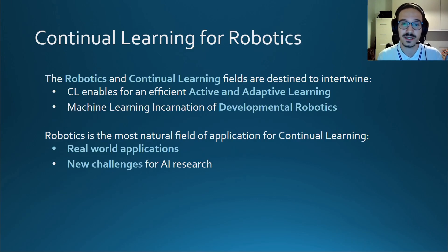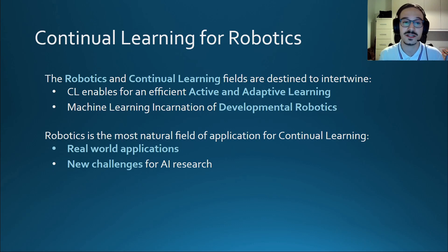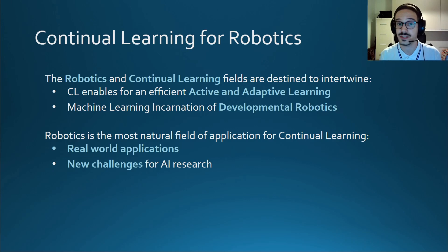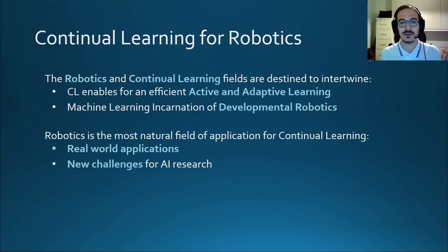Robotics and continual learning are strongly tied together. Continual learning can enable adaptive robotic applications which can learn autonomously, while robotics is an excellent field of application for continual learning research. Designing real-world applications provides new practical issues and challenges that can boost continual learning and AI research. However, beware that most of the continual learning literature does not actually target robotic systems. So in our work we had to explore an uncharted area by creating a solution that also considers the constraints commonly found in robotic devices.